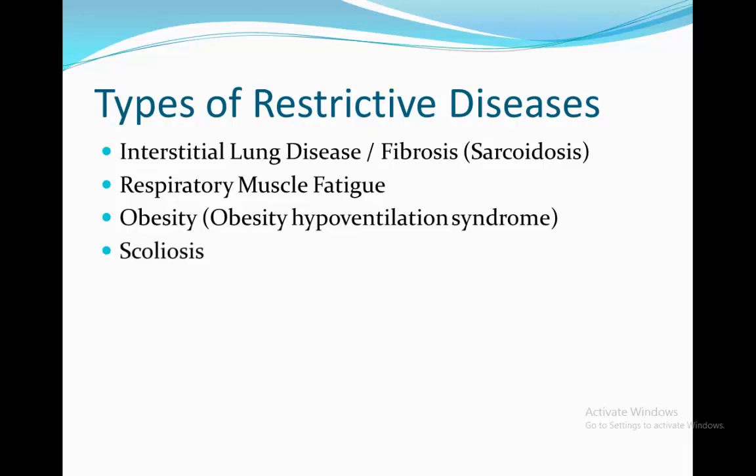In scoliosis, there is a skeletal deformity of the spine, making it curved sideways. This is just like respiratory muscle fatigue, meaning the thoracic wall can't expand properly and the lungs will have no room to expand. People with a resected lung will usually give you a restrictive picture, meaning a low volume — TLC and RV. This is usually a false positive, though, because one lung can't hold the same volume of air as two lungs during inspiration.